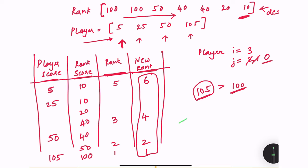With this optimized solution, the time complexity is O(n log m) where n is the number of new player scores and m is the number of previous ranks or scores recorded. The space complexity is O(1).